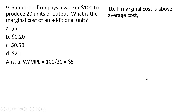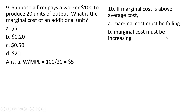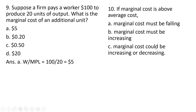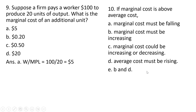Question 10. If marginal cost is above average total cost — marginal cost must be falling, that is incorrect. Marginal cost must be increasing — that is correct, answer choice B. Marginal cost could be increasing or decreasing — no, it must be increasing. Average cost must be rising — that is correct. Answer choices B and D are correct.